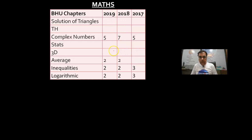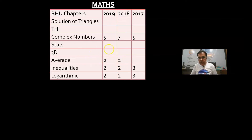For the Quant section, average-type questions: simple average questions with 5 to 10 numbers — if one number is missing, find the missing number. These are very simple questions. Also stats-based average: mean, median, mode, simple average — the kind of average you do in 9th to 10th standard math. That is the whole average topic.